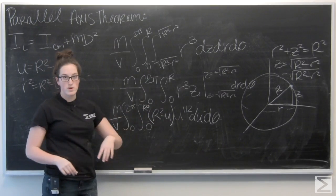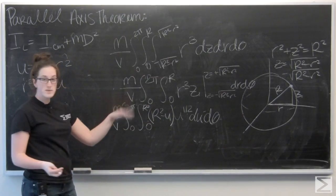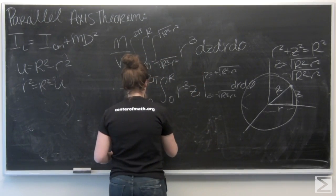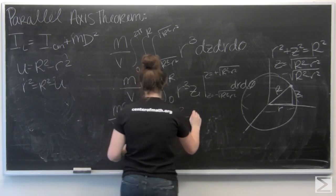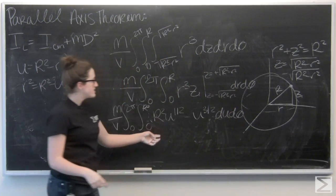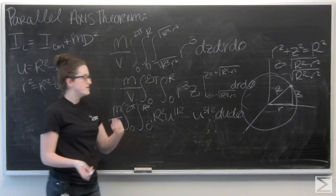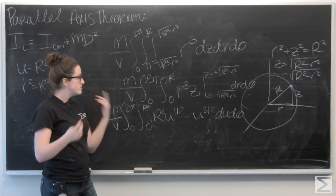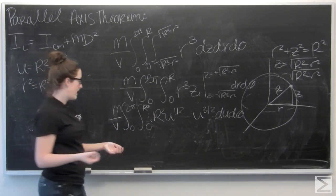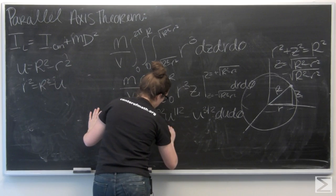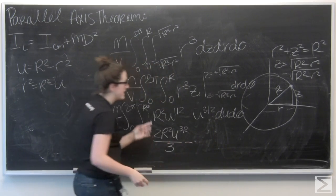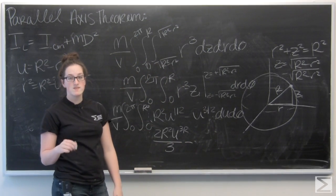Now I have (R² − U) times U to the 1/2. Let me go ahead and distribute: I get R² · U^(1/2) minus U^(3/2), dU dθ. Now we're ready to integrate. When I integrate U to the 1/2 I get (2/3) U^(3/2), and when I integrate U to the 3/2 I get (2/5) U^(5/2).